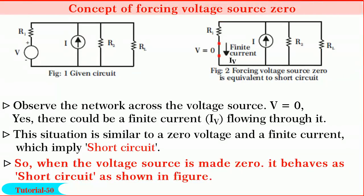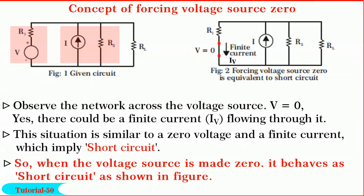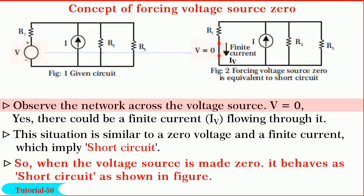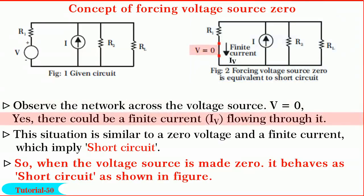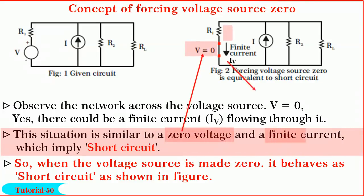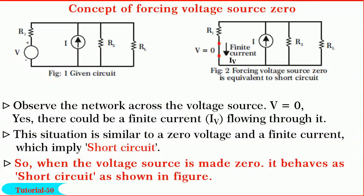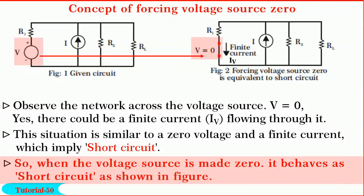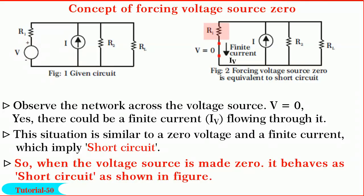Friends, next we shall learn the concept of forcing voltage source zero. Consider the network shown in figure. The network has one practical voltage source of V volts in series with R1 and one practical current source of I amperes in parallel with R2. First, let us consider forcing voltage source zero as shown in figure. Observe the network. The voltage source voltage V is equal to zero. But there could be a finite current IEV due to another source present in the network. So, this situation is similar to a zero voltage and a finite current which implies short circuit. So, when the voltage source is forced to zero, it is equivalent to short circuit. Note, the series resistance is left as it is.